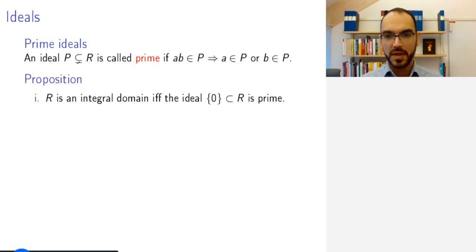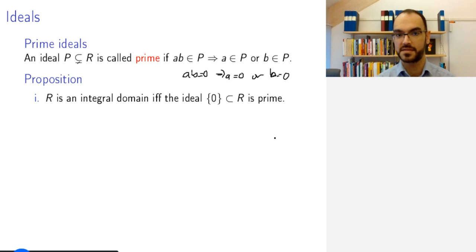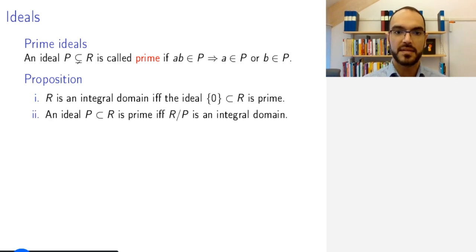One way to rephrase the condition that a ring is an integral domain is to say that the zero ideal is a prime ideal. This condition then just says that ab equals zero implies a equals zero or b equals zero, which is exactly the lack of zero divisors. More generally, if you take any ring and you take an ideal, then this ideal is prime if and only if the quotient ring is an integral domain.